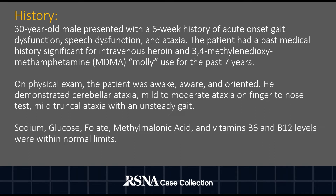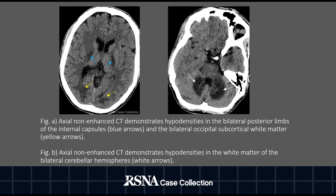His sodium, glucose, folate, methylmalonic acid, and vitamins B6 and B12 levels were within normal limits. The patient then underwent an unenhanced CT of the brain to further evaluate his symptoms. We have two axial cuts of the brain here. Figure A on the left is at the level of the basal ganglia, demonstrating symmetric hypodensities in the bilateral posterior limbs of the internal capsule and the subcortical white matter of the bilateral occipital lobes. Figure B on the right is at the level of the cerebellum, demonstrating hypodensities in the white matter of the cerebellum bilaterally.